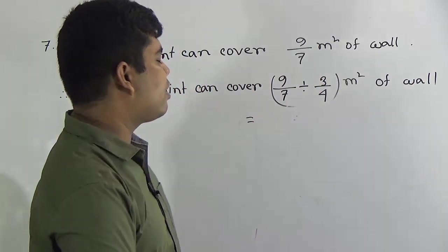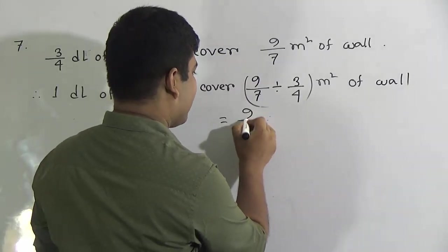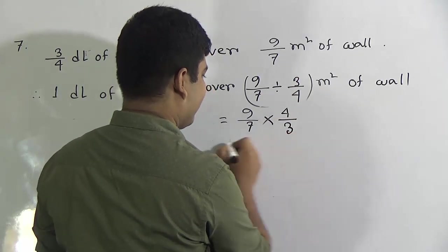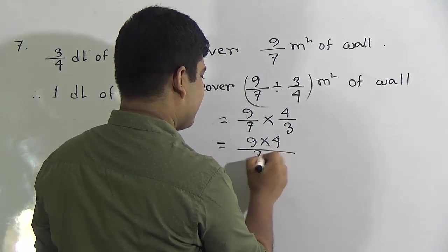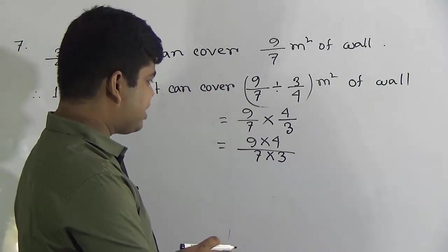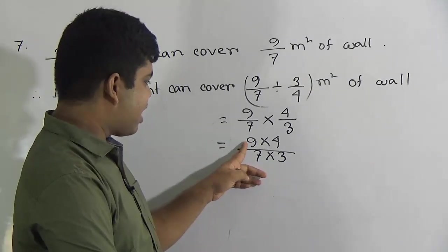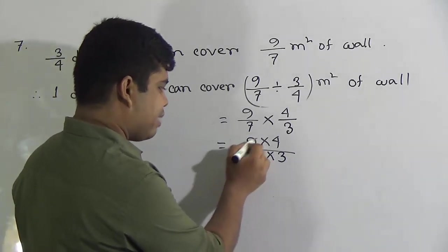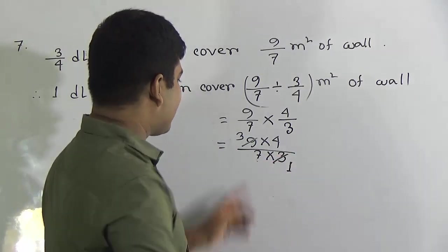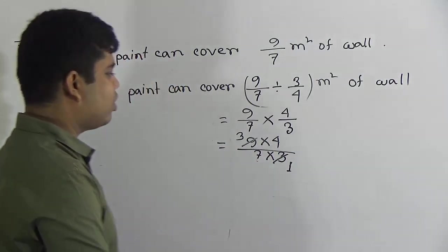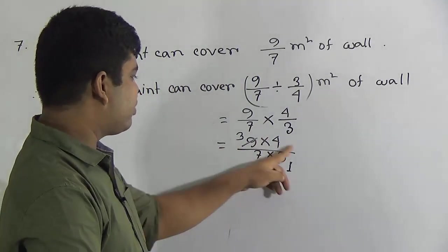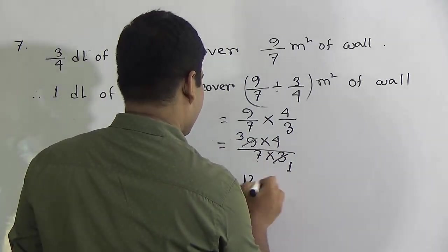We do the division: 9/7 — change division to multiplication — and reverse 3/4 to 4/3. So we have 9 × 4 over 7 × 3. Notice that 9 and 3 share a common divisor of 3: 9 ÷ 3 = 3 and 3 ÷ 3 = 1. Now we have 3 × 4 over 7 × 1. There is no common divisor between 3, 4, 7, or 1, so we multiply: 3 × 4 = 12 and 7 × 1 = 7.